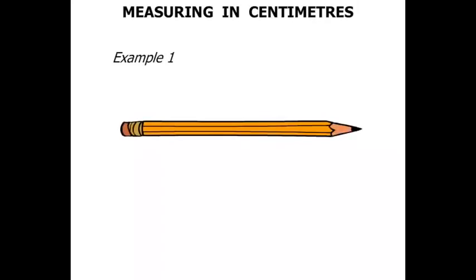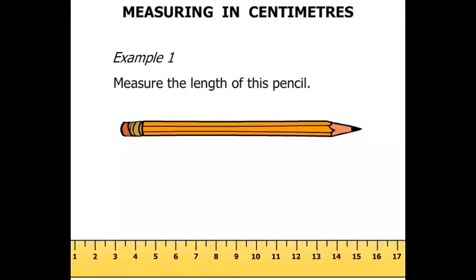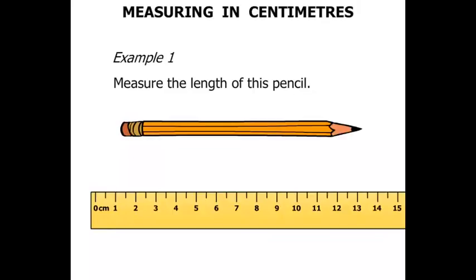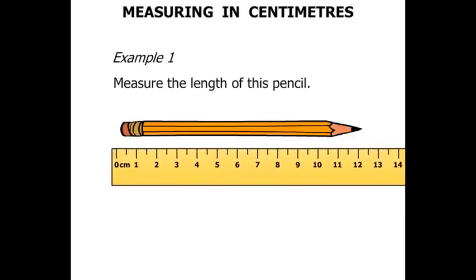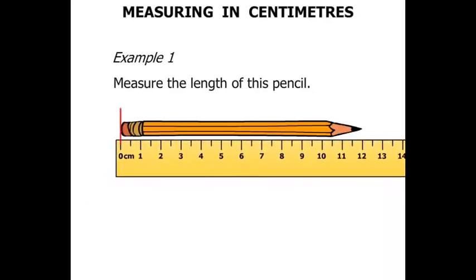Example 1. We've got a pencil and we're asked to measure its length, so we're going to use a ruler. You can see very carefully that we start from 0 centimeters. We need to move that to the start of the pencil. We line that up there, and the tip of the pencil is lined up with 12. So the length equals 12 centimeters.